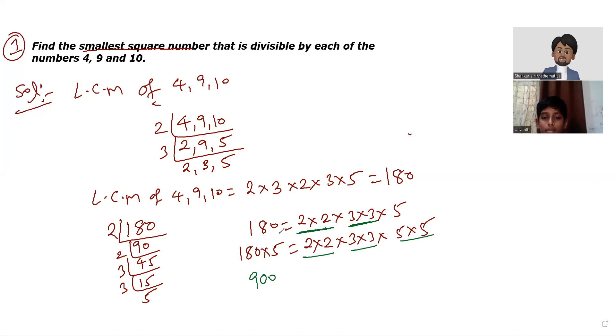2×3×5 we can read, but they are asking smallest square number. Now so 900 we got, this is nothing but what we know already, 30 square. So now my conclusion is therefore 900 is the smallest square number.